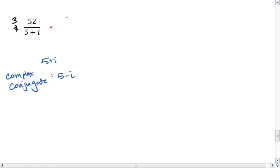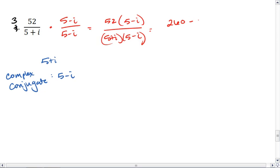We multiply both the numerator and the denominator by the complex conjugate. We get 52 times 5 minus i all over 5 plus i times 5 minus i, which gives us 260 minus 52i all over 25 plus 1.